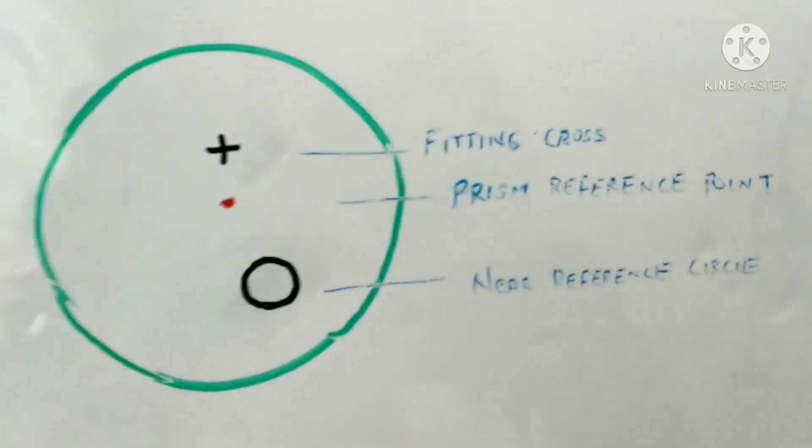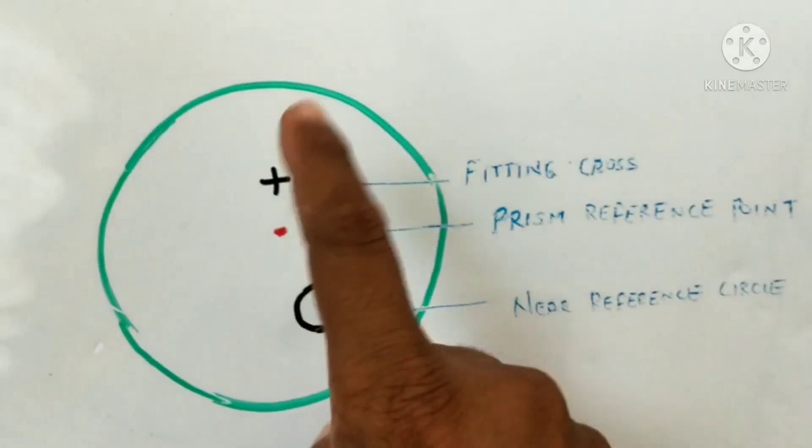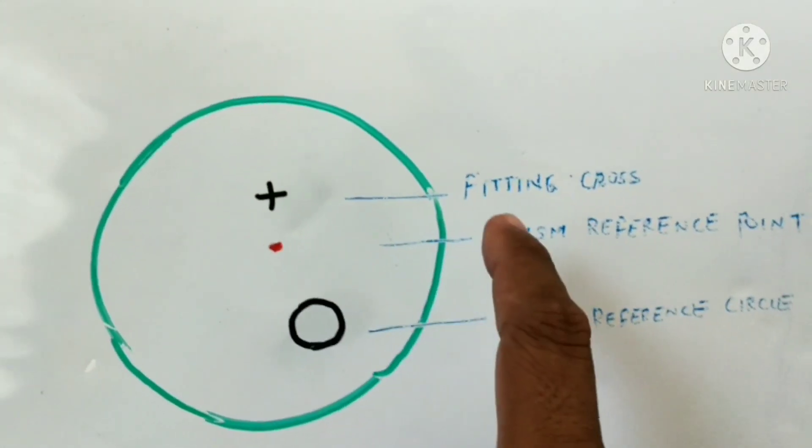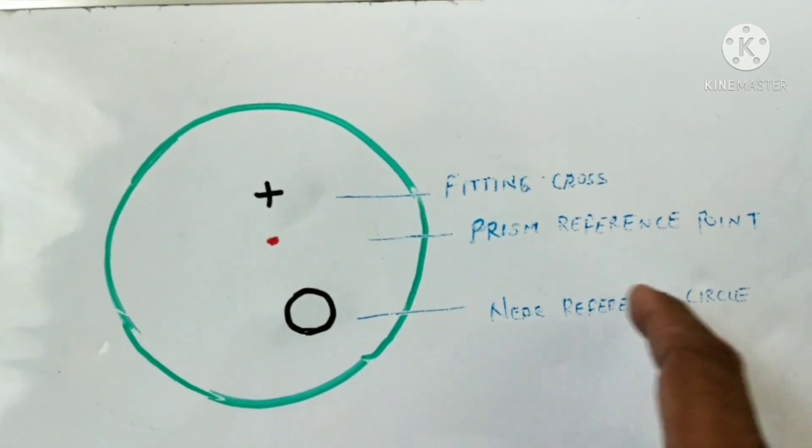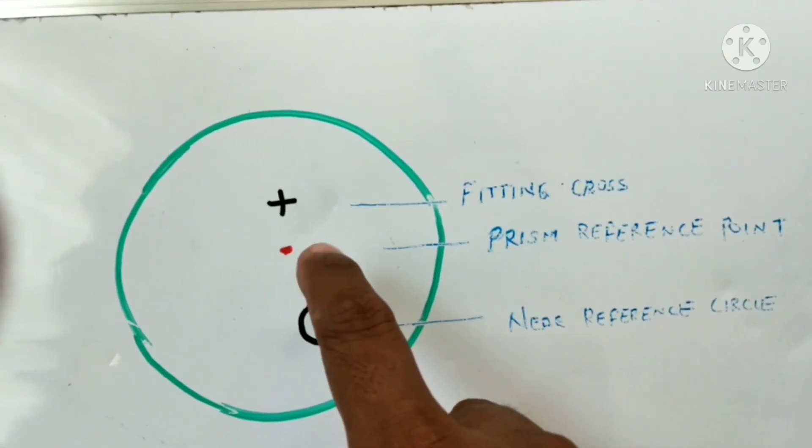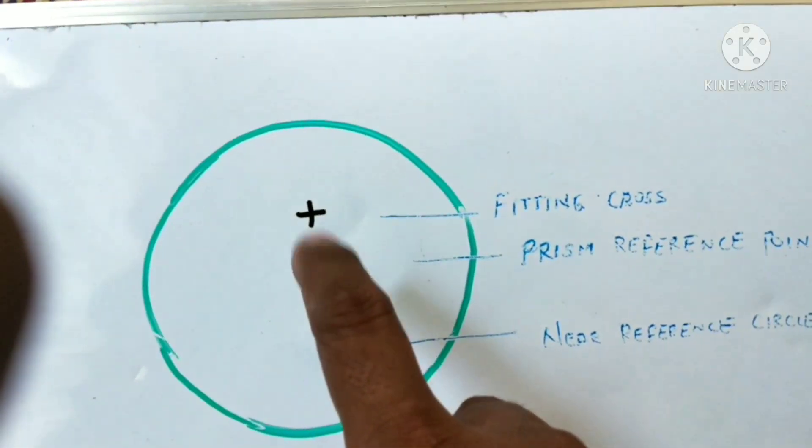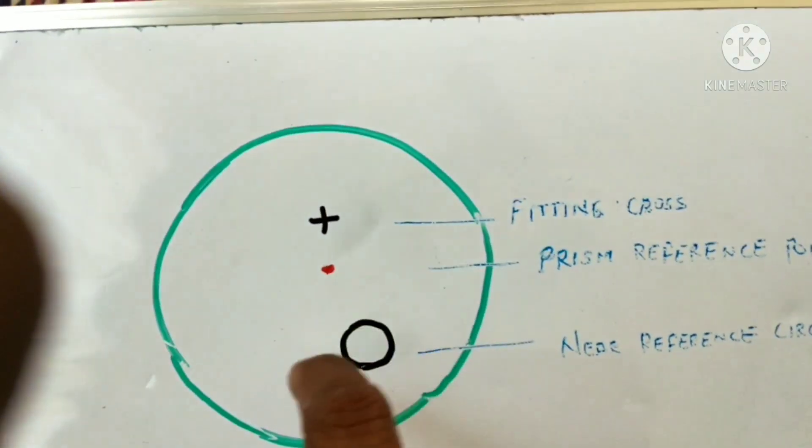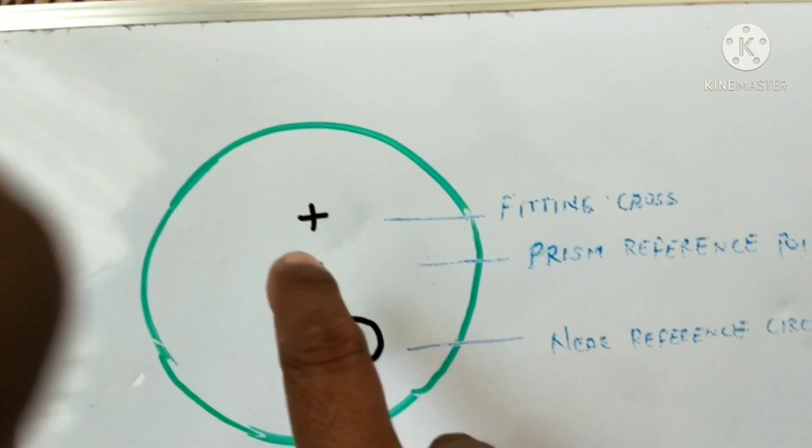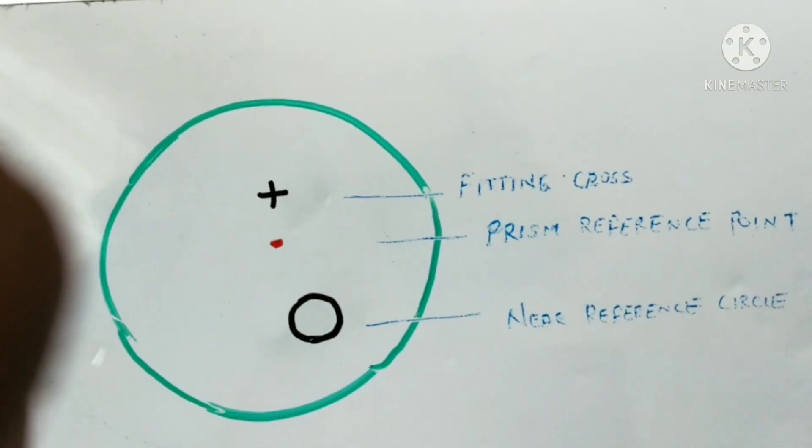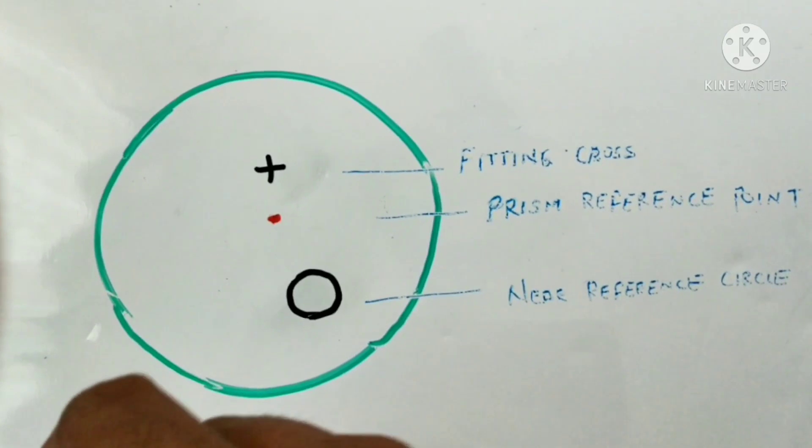Let's get into progressive lenses and in particular prism reference point. The general layout of a progressive lens has a fitting cross, prism reference point, and near reference circle. Generally this fitting cross can be 2 mm above, 4 mm above, or on the prism reference point itself, depending on the manufacturer and their standard settings.